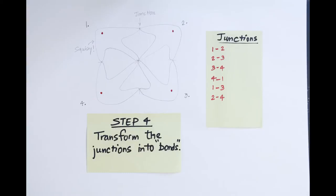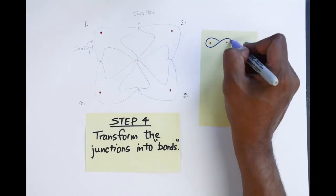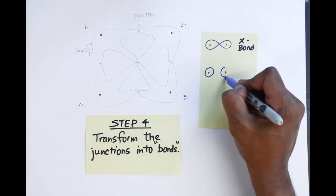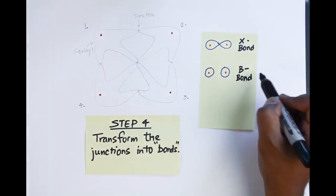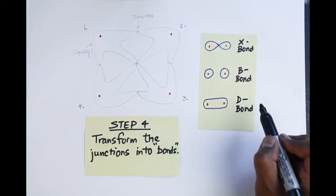Step four, transform the junctions into bonds. Here, we'll consider three types of bonds between a pair of dots: a cross bond called x bond, a broken bond called the b bond, and a double bond called the d bond.